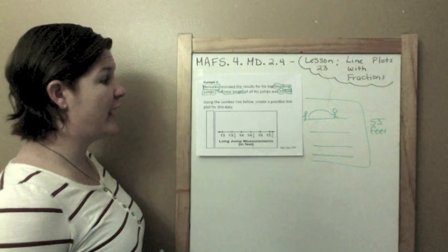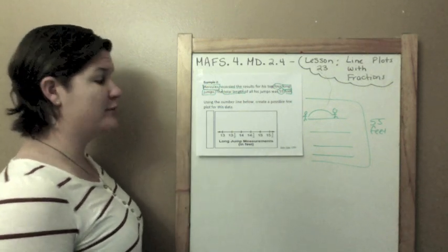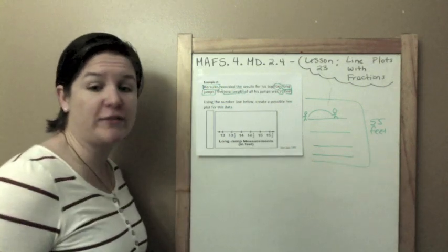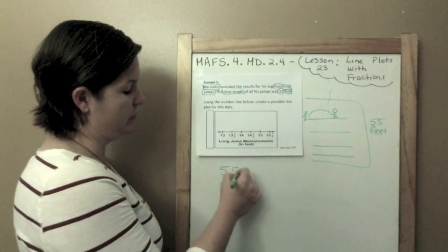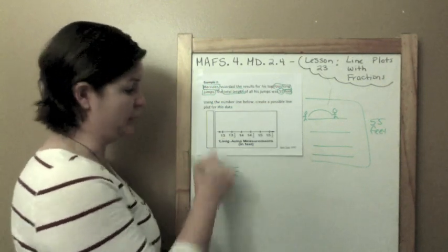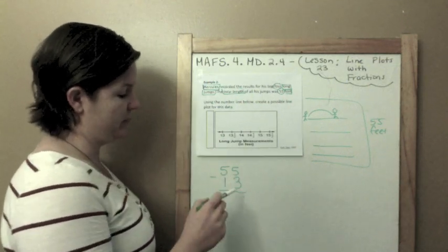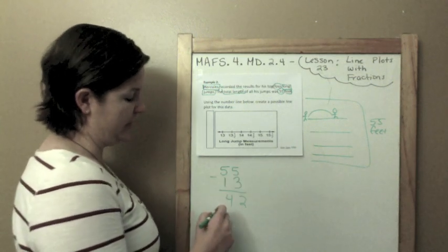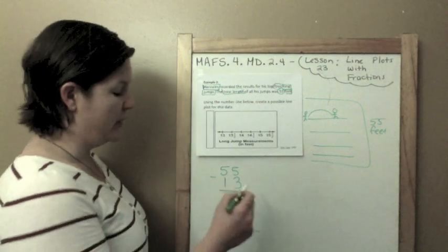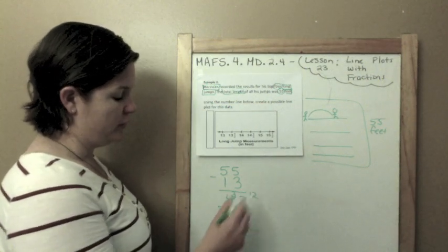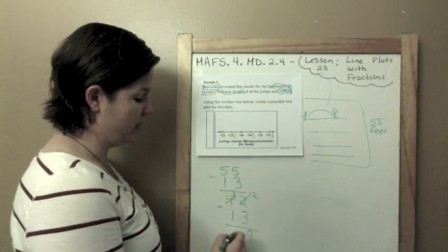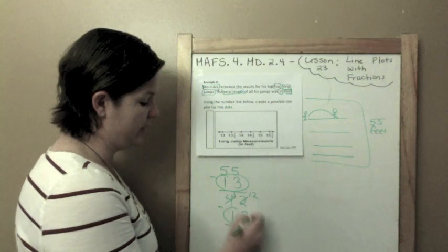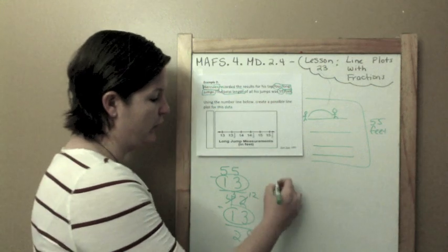Using the number line below, create a possible line plot for his data. What we need to do is place four X's up here to represent each jump. Our jump total needs to equal 55. So I'm going to start kind of easy. I'm going to take my total and I'm going to subtract the smallest, 13. 55 minus 13, so 5 minus 3 is 2, 5 minus 1 is 4, that's 42. Now I'm going to subtract another 13 just to kind of see where I am. 2 minus 3, we can't do that, so we regroup. That becomes 12. 12 minus 3 is 9, and 3 minus 1 is 2, so 29. I have 29 and I have two more jumps.